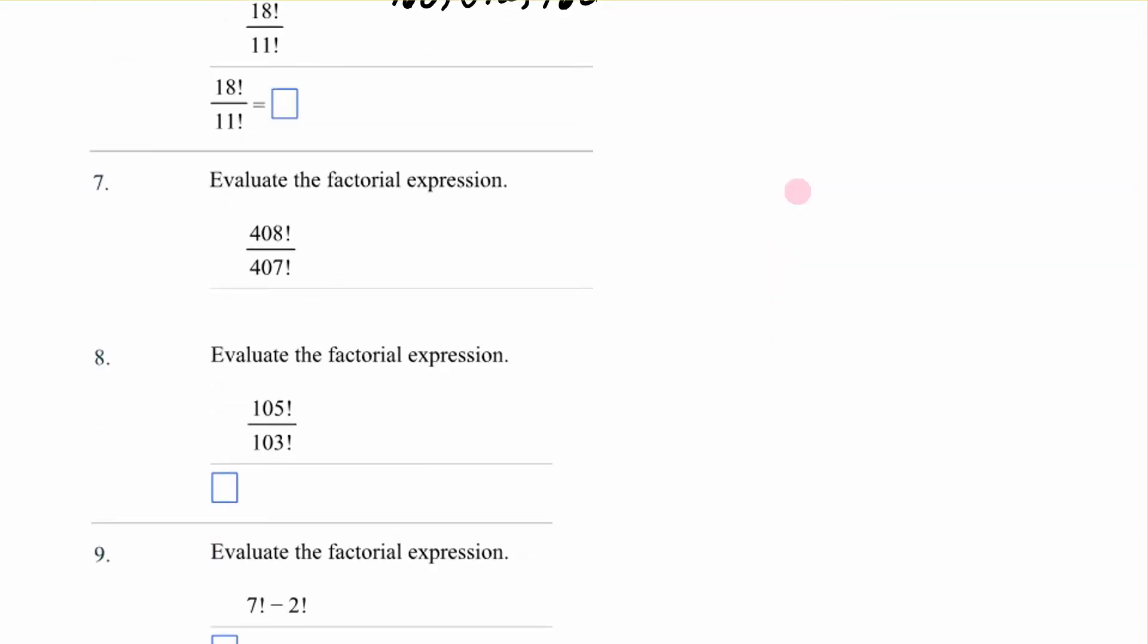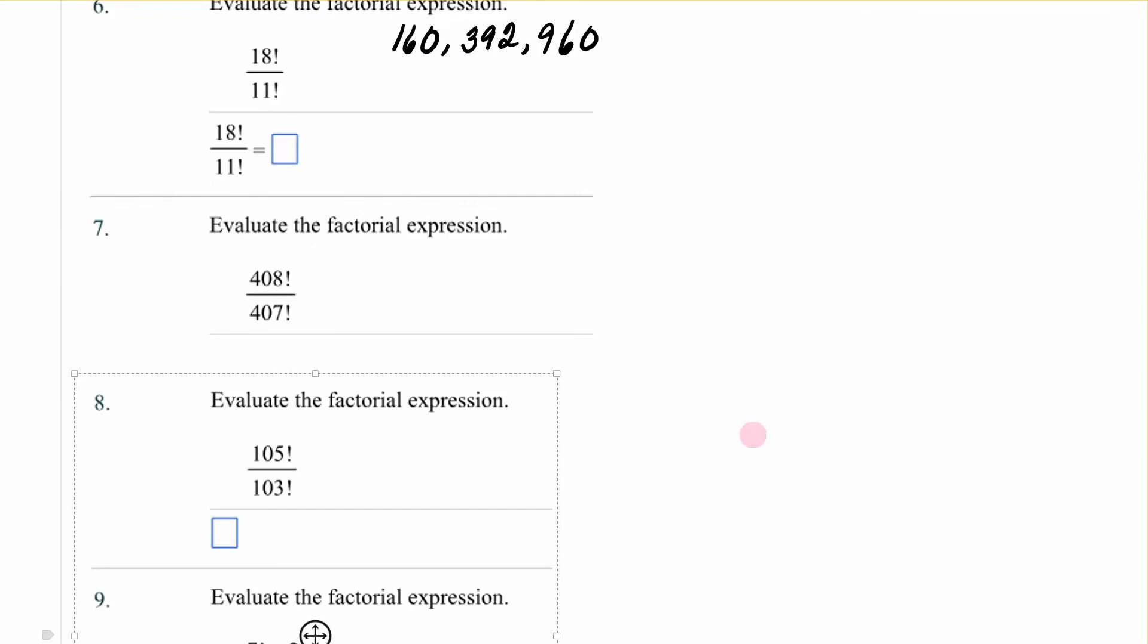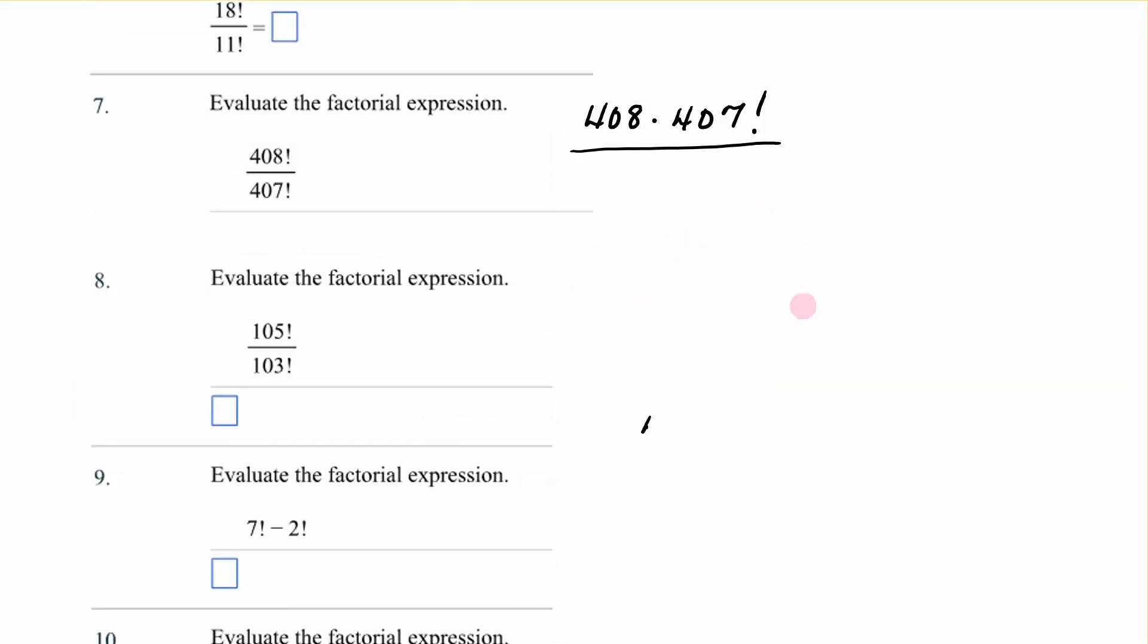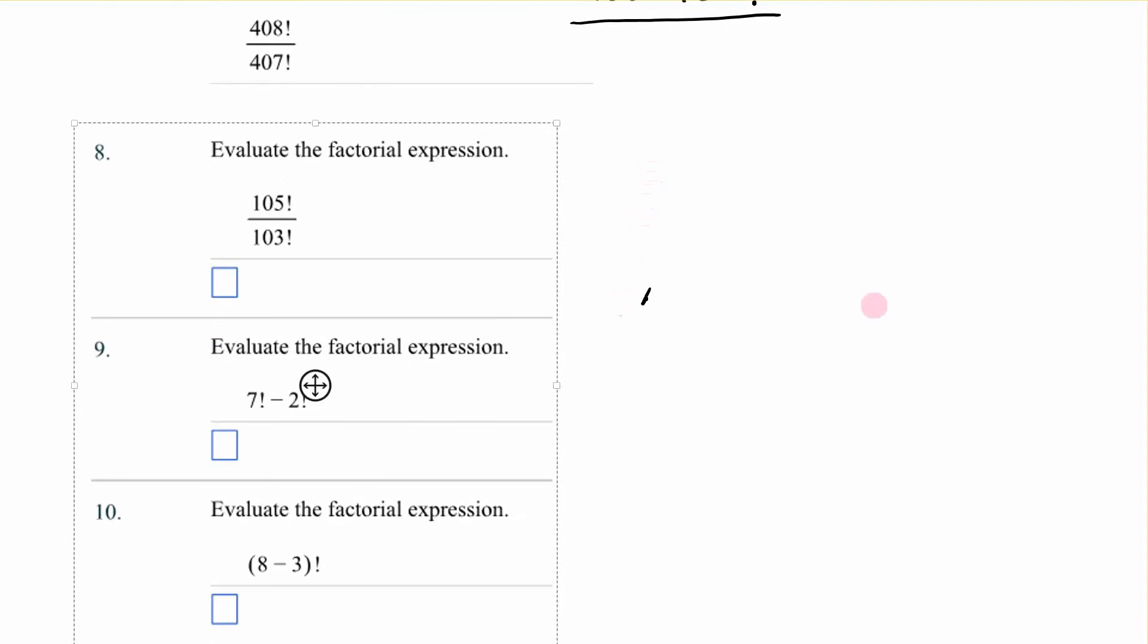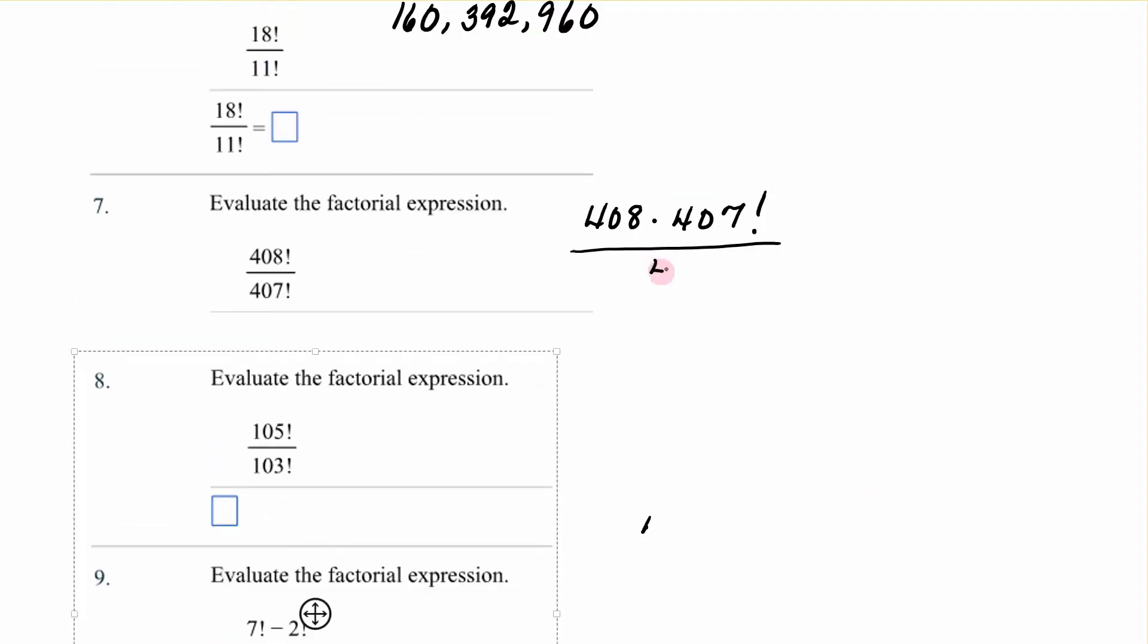Number 7. I'm supposed to evaluate 408 factorial over 407 factorial. Now honestly, it is going to be easier for me to do that without a calculator. Because that is 408 times 407 factorial over 407 factorial. Those cancel out. And that is 408. And that was actually faster than doing all the factorials on the calculator.